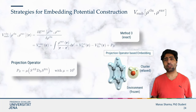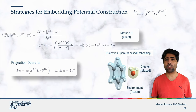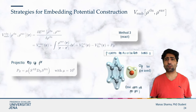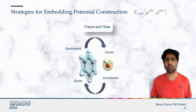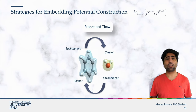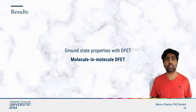To sum up, method 1 and method 2 are suitable for weakly interacting systems, while method 3 gives exact results even for strongly interacting systems. It is also quite common to perform a freeze-and-thaw procedure where the roles of the cluster and the environment are interchanged iteratively. Now let's see what kind of results one can expect in practice, starting with ground state properties with DFET.